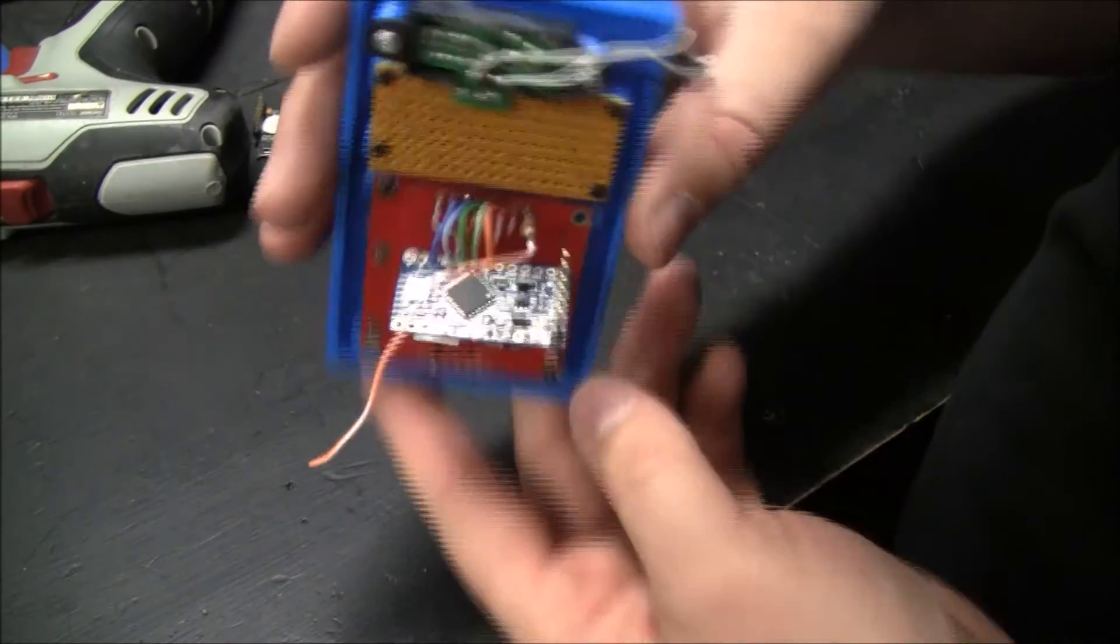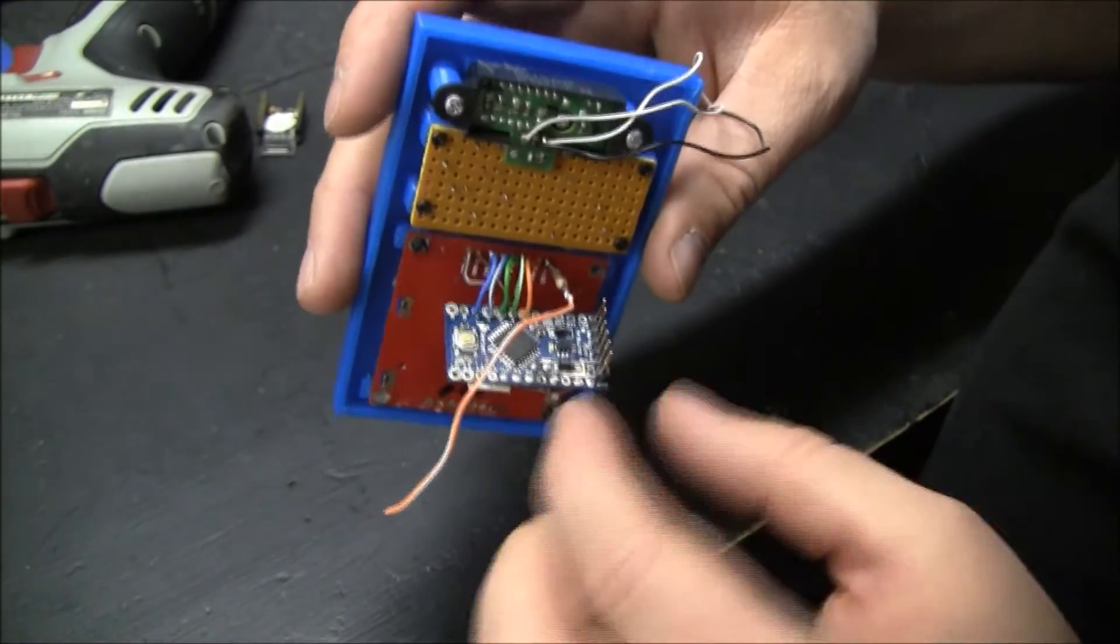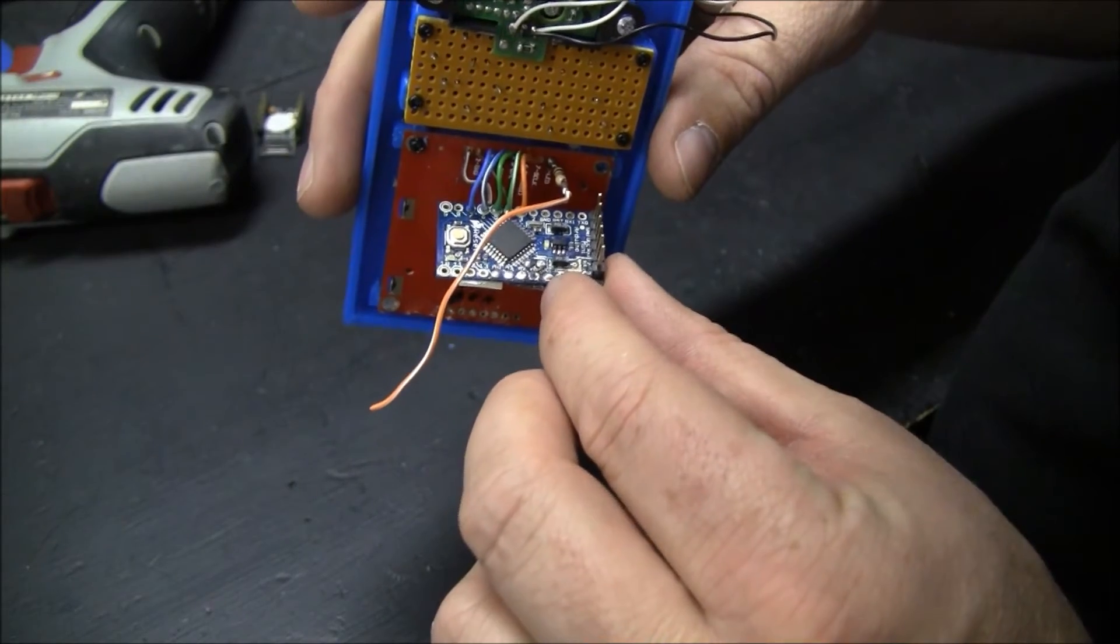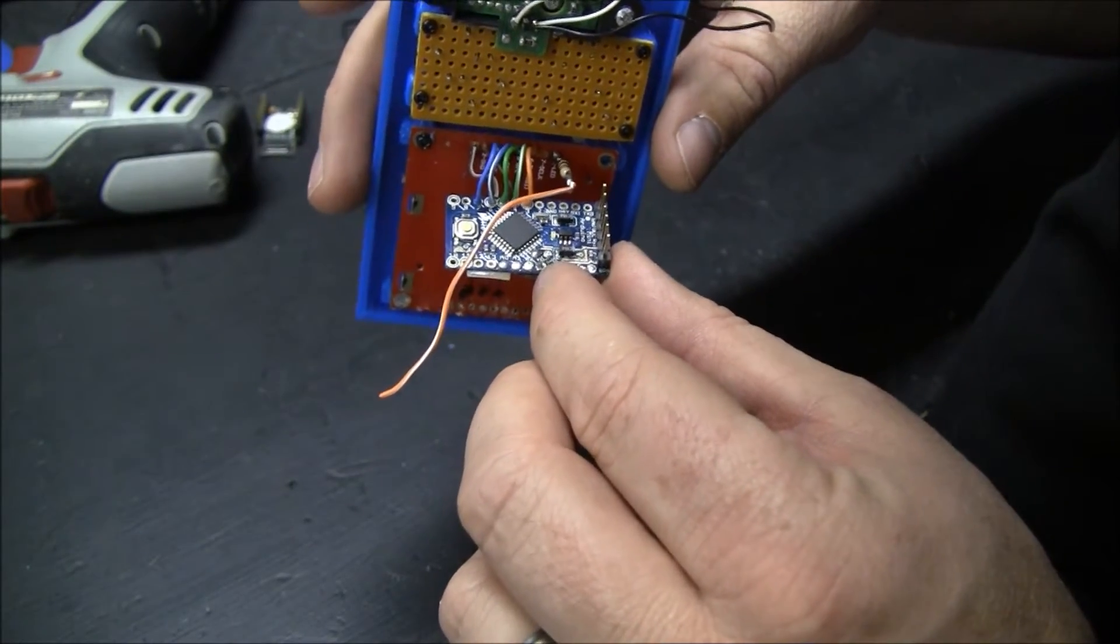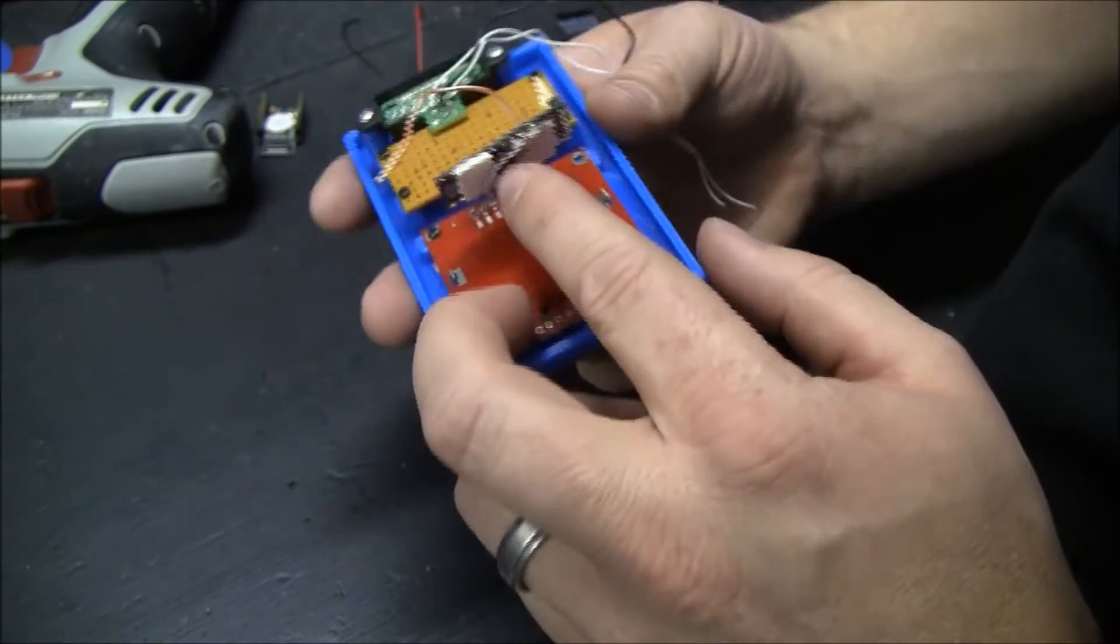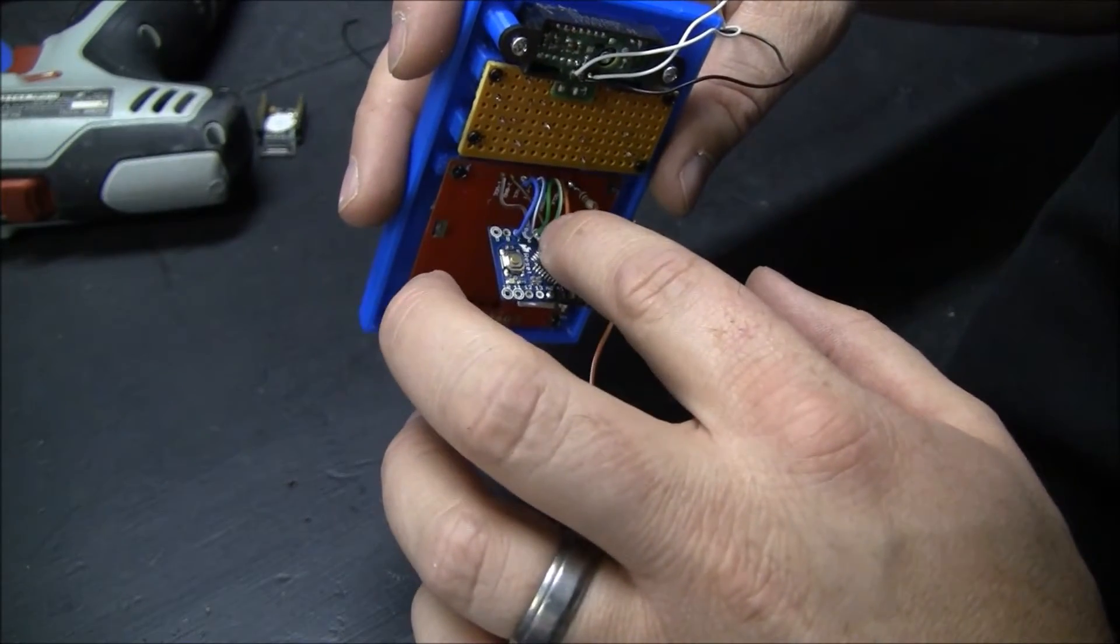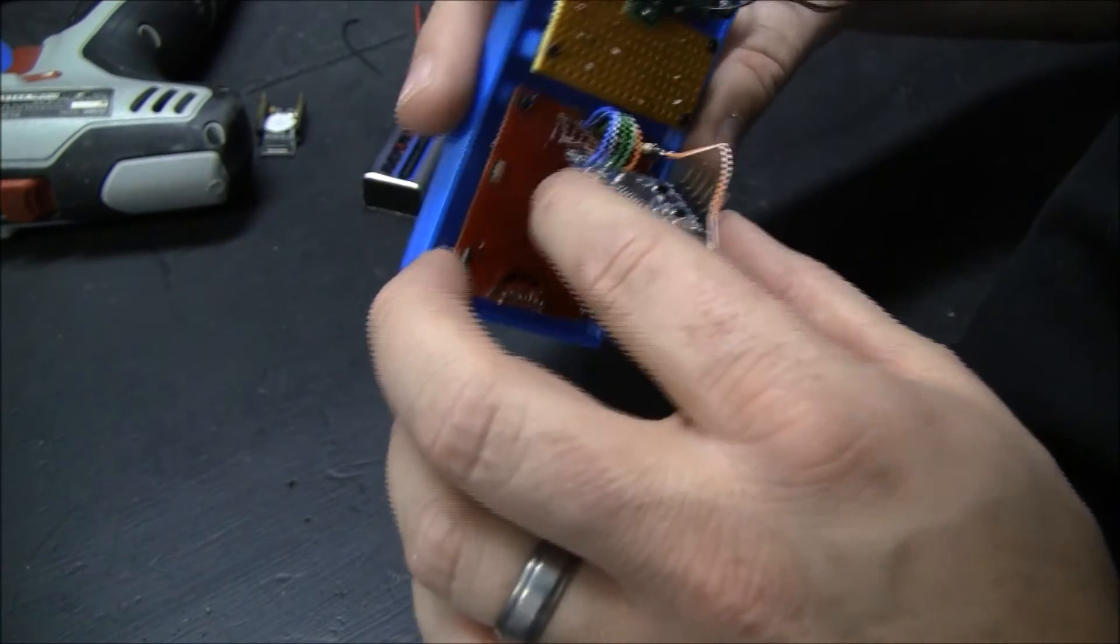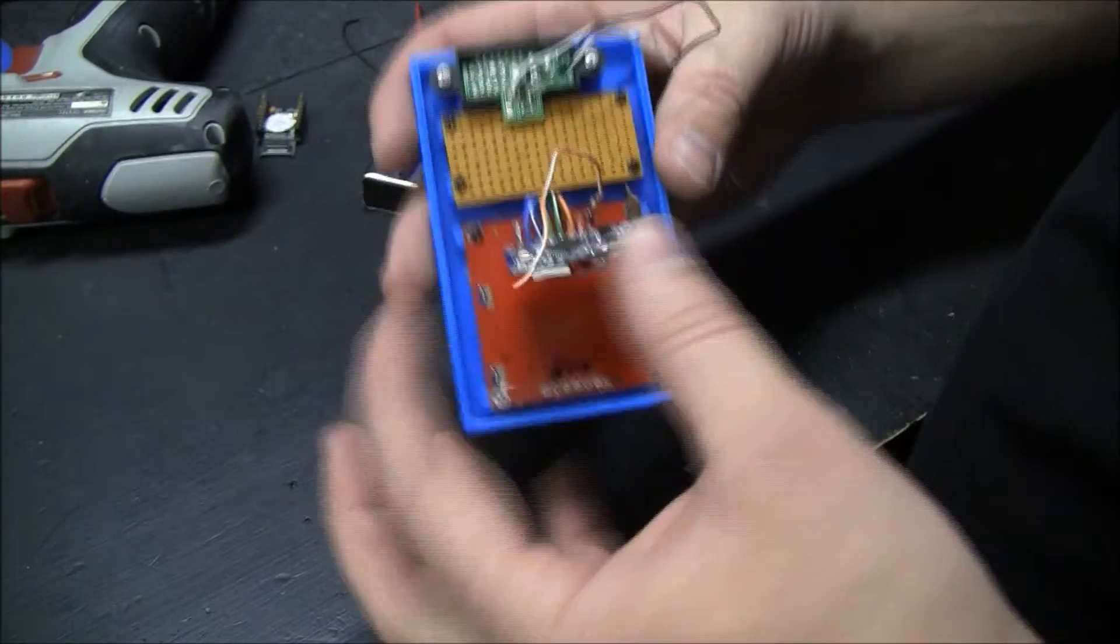So the LCD gets power. We've got VCC, which is our regulated power, right here. And then ground. Then we're using 3, 4, 5, 6, and 7 to drive the LCD display.